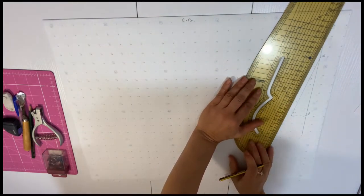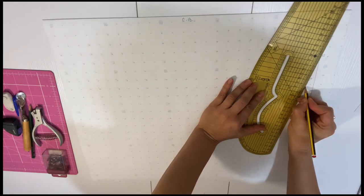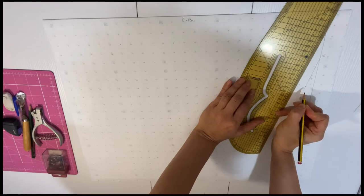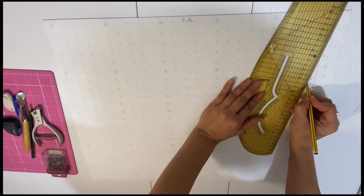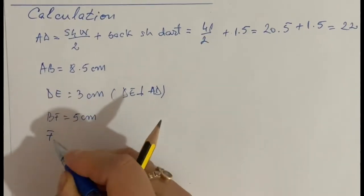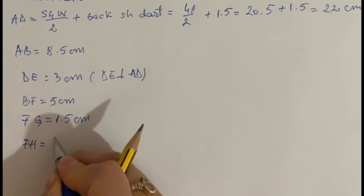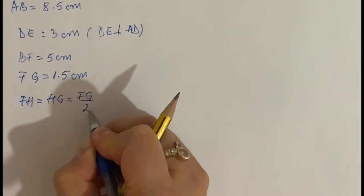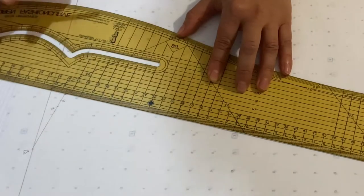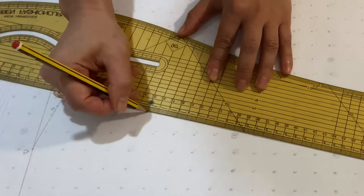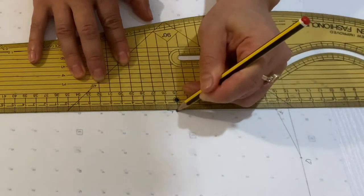From F measure another 1.5 cm to add the dart and mark G. Divide FG by 2 to find the middle of the dart and mark H. Draw a perpendicular line of 8.5 cm from G and mark I. Join F with I which will be 8.5 cm again.